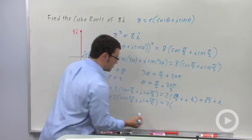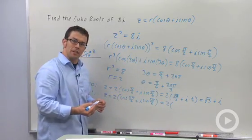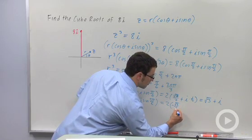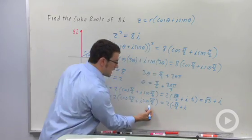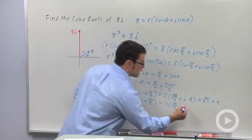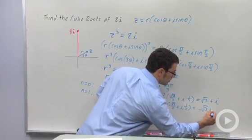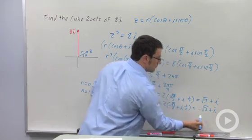That's my new argument. So z equals 2 cosine 5 pi over 6 plus i sine 5 pi over 6. And I get 2 times the cosine of 5 pi over 6 is minus root 3 over 2. And the sine of 5 pi over 6 is 1 half again. So I get minus root 3 plus i. That's my second root.